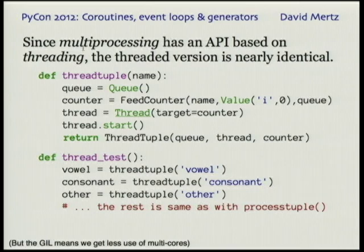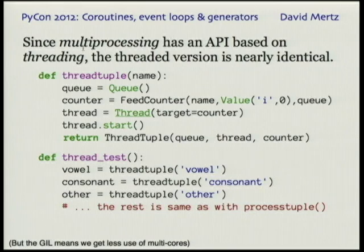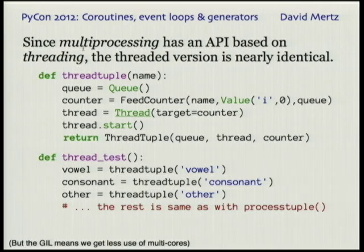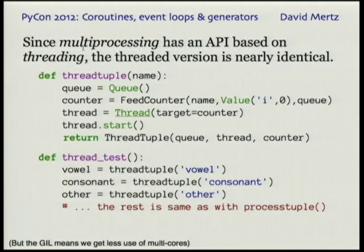Multiprocessing is this wonderful module that's built to look exactly like threading, so we can do the exact same thing with threads — the whole difference being basically what's underlined: instead of calling Process you call Thread, and the rest looks exactly the same. Of course, the difference is that if you do threads you're going to run into problems with the global interpreter lock, and basically these things aren't going to be running concurrently anymore. In my opinion, probably throw away threads most of the time — multiprocessing is just so much nicer. But process creation time is slightly more expensive than thread creation time.